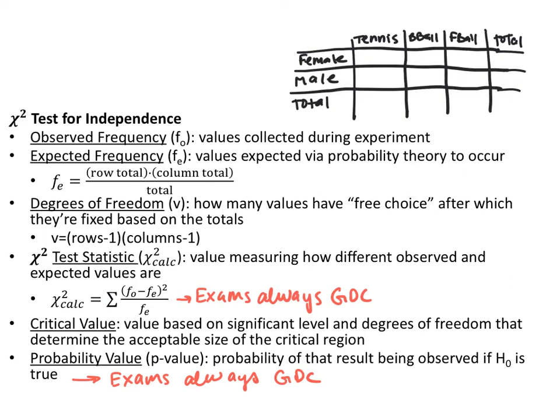The critical value is based on your significance level and degrees of freedom — it's the region where we say it's acceptable to be this random. This is only used when calculating by hand; otherwise, just use your alpha level. The p-value is the probability that the observed result is random. We'll use the graphing calculator for this, and it's what we compare to our alpha level. Out of context this may not make complete sense, so write down the vocabulary so we can use it in examples.